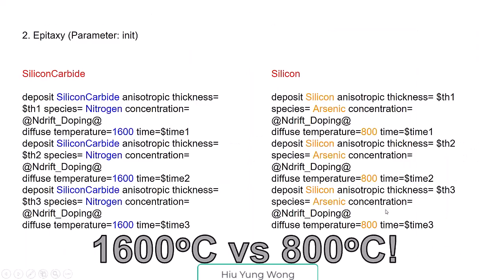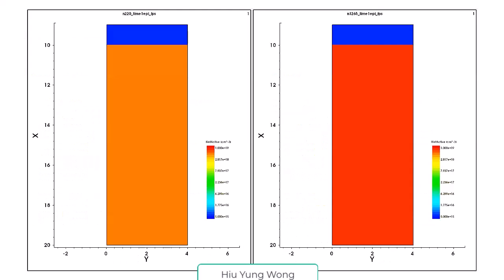Then we grow the epitaxy. You see silicon uses 800 degrees to grow the epi, but silicon carbide uses 1600. I want you to appreciate the temperature scale. If you're a good silicon device engineer, you probably want to appreciate silicon carbide is high because it has much higher melting point.